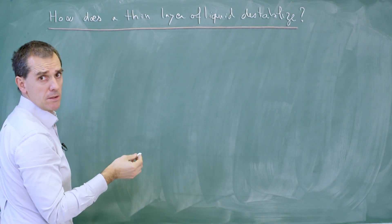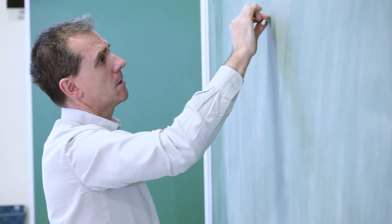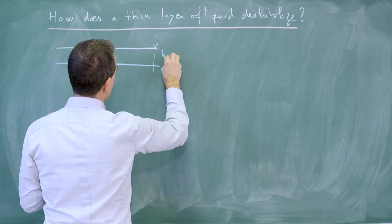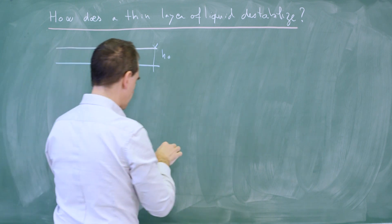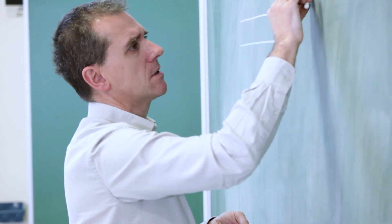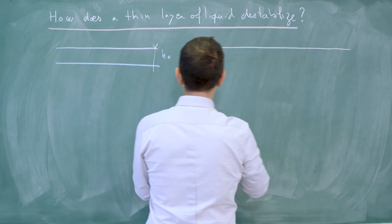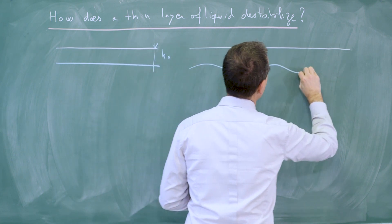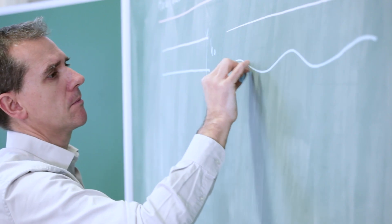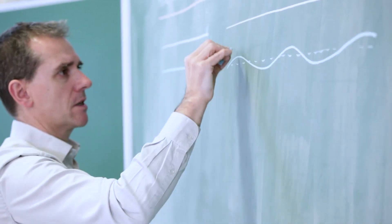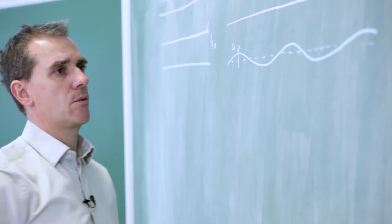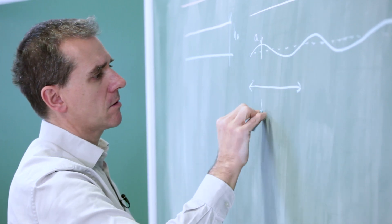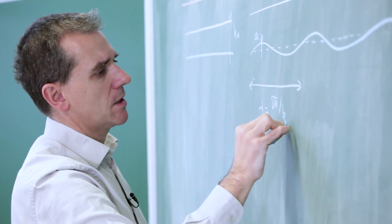The situation is to paint a ceiling. We draw the ceiling here, and we call H0 the thickness of the paint that we deposit on the ceiling. We are going to discuss the stability of this layer of liquid, and more precisely, we are going to consider what will happen to a perturbation. The perturbation is characterized by the amplitude of the wave and by the wavelength lambda, which is 2π over k, the wave number.